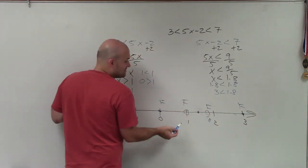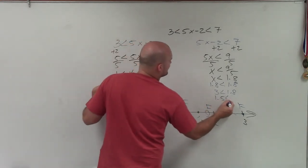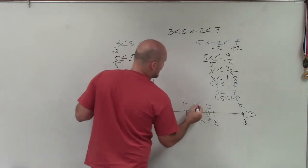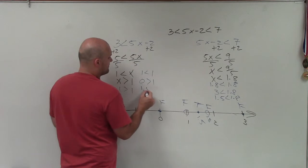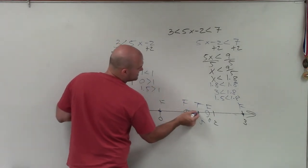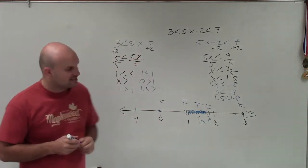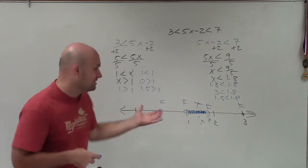So therefore, I can assume it has to be in the middle. Let's just try 1.5. Is 1.5 less than 1.8? That's true. Is 1.5 greater than 1? That's true. So therefore, all the points between these two solutions are going to make it true. And there you can see that is going to be my compound inequality.